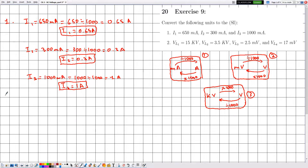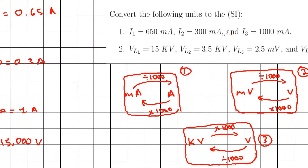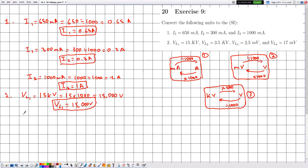In number two, the voltage of lamp L1 is given as 15 kilovolts. To convert from kilovolts to volts we multiply by 1000, so 15 multiplied by 1000 gives 15,000 volts. For the voltage across lamp L2, given as 3.5 kilovolts, multiplying by 1000 gives 3500 volts.